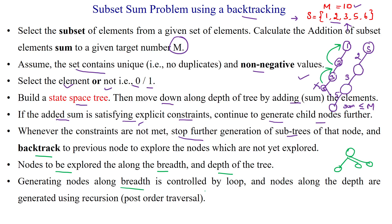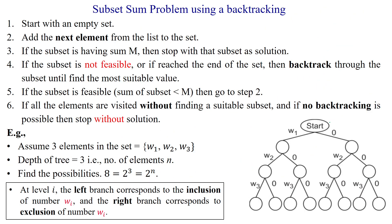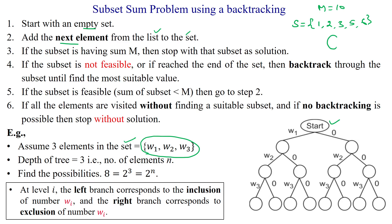The breadth of the node is controlled by looping statements and depth is controlled by recursive calls. Now we will see the example. We have three elements available in the set. Starting with the empty set, we add the next element from the list to the set. Here we have s = {1, 2, 3, 5, 6} and our target element is 10. We start with the empty set and add element 1 first, then add element 2.